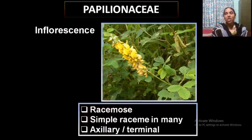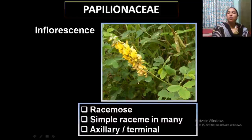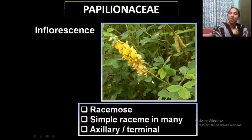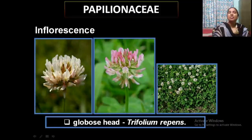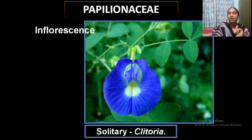The inflorescence is racemose, which may be axillary or terminal in position. Crotalaria is a typical example of racemose inflorescence, bearing numerous seeds inside the fruit. Some other inflorescence types include globose head — example Trifolium. Some occur as solitary flowers, example Clitoria.